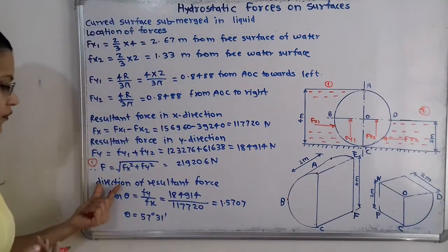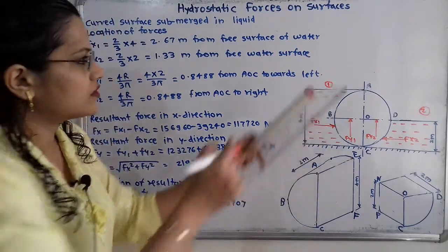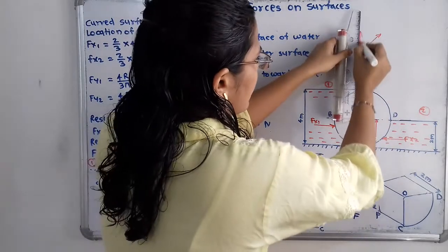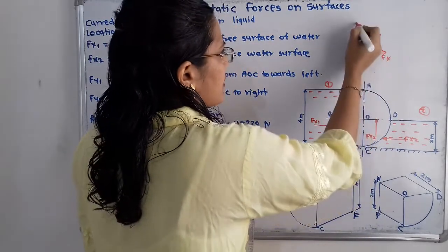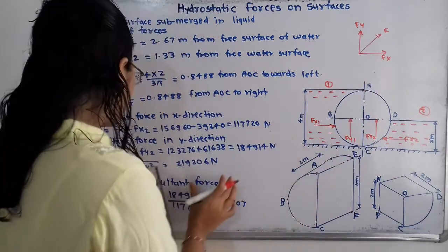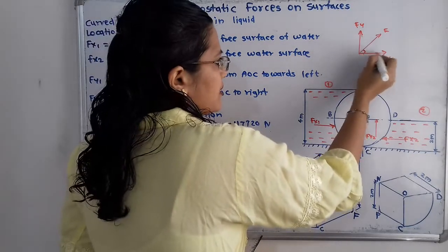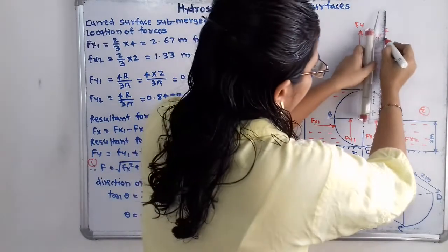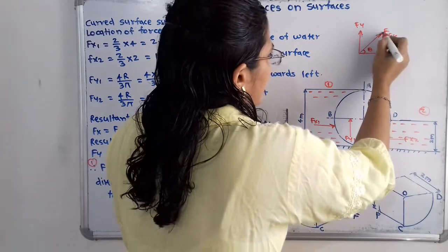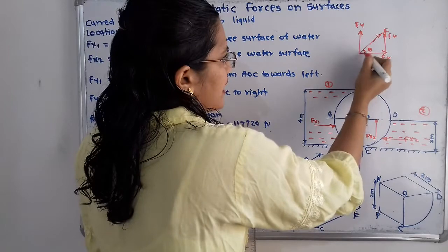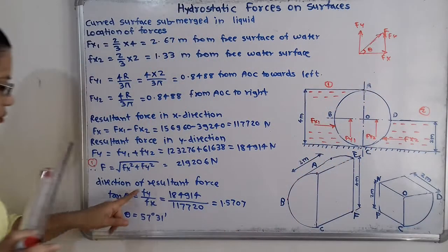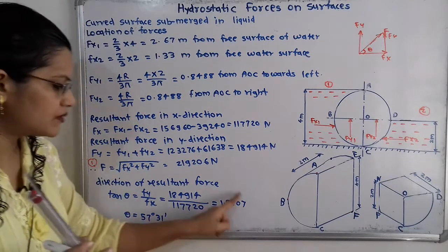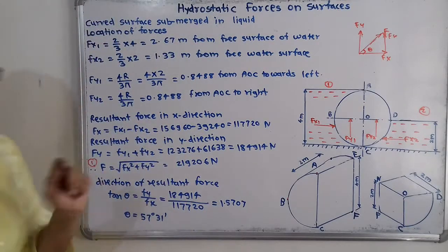For the direction of the resultant force, since F is inclined with horizontal component FX and vertical component FY, the angle theta satisfies tan(θ) = FY / FX = 184,940 / 117,720 = 1.5707. Therefore θ = tan⁻¹(1.5707) = 57 degrees 31 minutes.